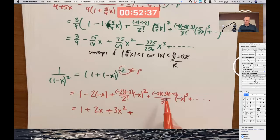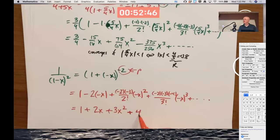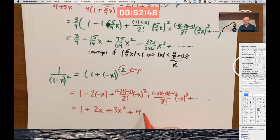2 times 3 times 4. It's like 1 times 2 times 3 times 4. It's like factorial. 4 factorial divided by 3 factorial is 4. Very nice pattern there, huh? I guess the next one would be 5x to the 4th and then 6x to the 5th. Is that right?